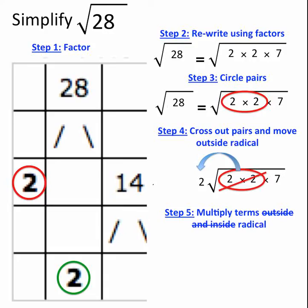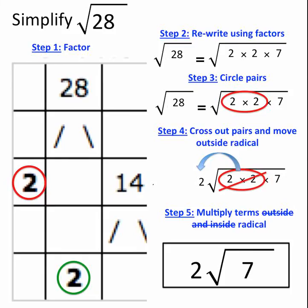2 is by itself with nothing to multiply it by, and 7 is also by itself since that pair of 2s has been crossed out. So my answer is simply 2 radical 7, or 2 times the square root of 7, which cannot be simplified any further.